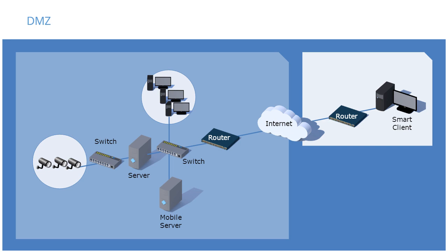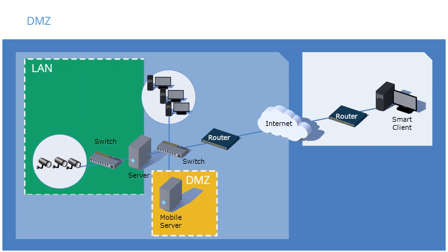For security purposes, the mobile server is often placed into a DMZ, demilitarized zone. In computer security, a DMZ, sometimes referred to as a perimeter network, is a physical or logical subnetwork that contains and exposes an organization's external-facing services to a typically larger and untrusted network, usually the Internet. The purpose of a DMZ is to add an additional layer of security to an organization's local area network, LAN. An external network node can access only what is exposed in the DMZ, while the rest of the organization's network is firewalled.